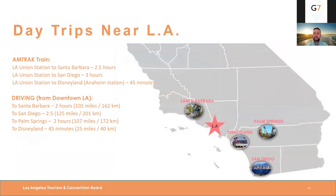A great approach is to use LA as a base to explore Southern California. Amtrak is a great, affordable, reliable way to get around — Santa Barbara is just two and a half hours north, known for its wineries and architecture; San Diego is about three hours; and you can get to Disneyland in Anaheim in about 45 minutes from Union Station downtown. Driving is also one of the best ways to see California — Santa Barbara, San Diego, or out to Palm Springs, which is beautiful and only about two hours away. Consider using LA as a base for day trips to these amazing destinations.